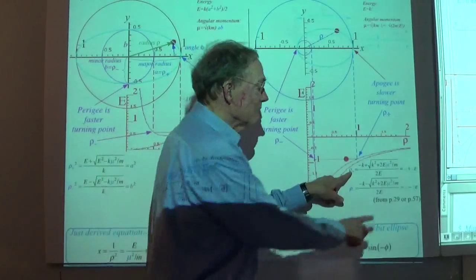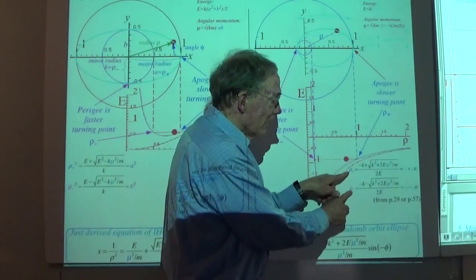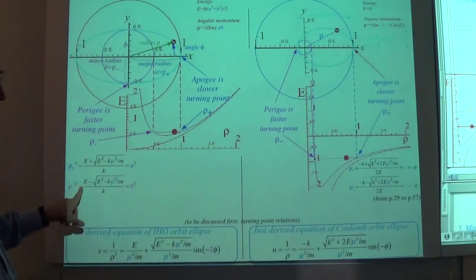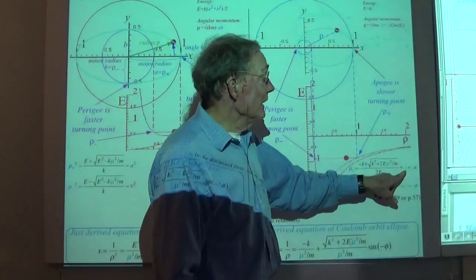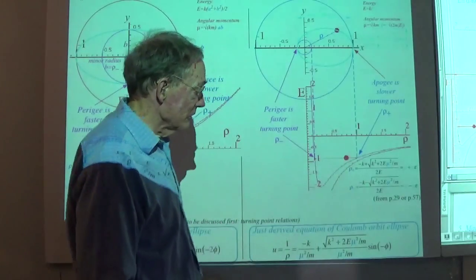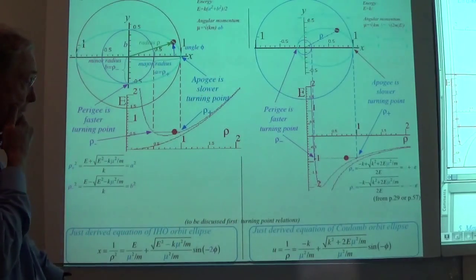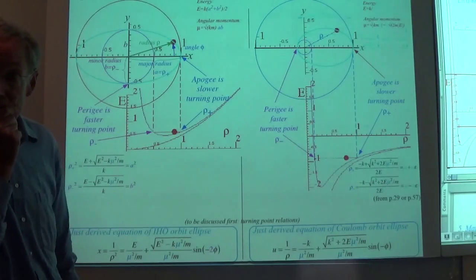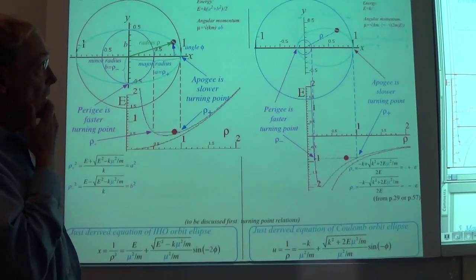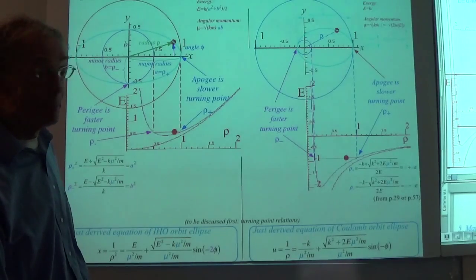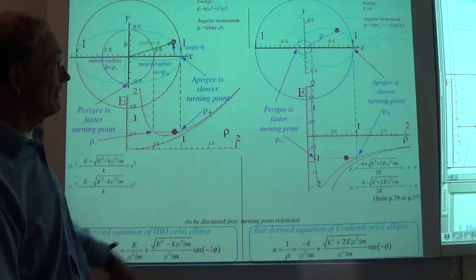We've derived a trajectory equation for both systems using the same techniques. Now you can check all of these parameters. We have from the turning points for the Coulomb system A squared and B squared on the oscillator side, and on the Coulomb side A plus epsilon·A and A minus epsilon·A. That's what we're going to spend the rest of this lecture on — we have a good half hour to do it.